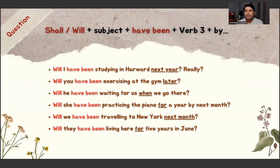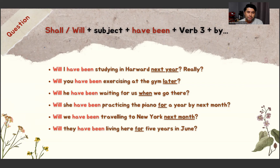Examples: Will I have been studying in Harvard next year? Will you have been exercising at the gym later? Will he have been waiting for us when we go there? Will she have been practicing the piano for a year by next month? Will we have been traveling to New York next month? Will they have been living here for five years in June?